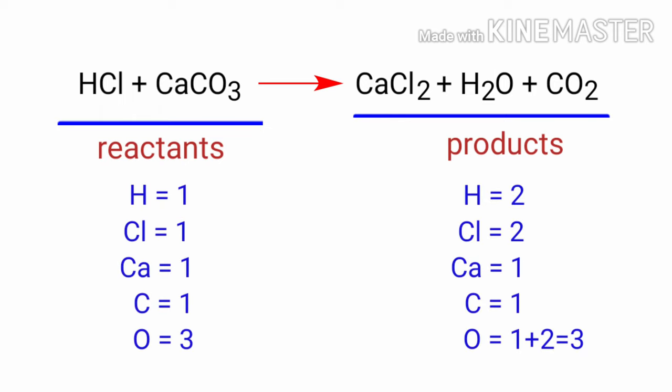If you look at this equation, the equation is not balanced. In the reactants side there are 1 Hydrogen atom, 1 Chlorine atom, 1 Calcium atom, 1 Carbon atom, and 3 Oxygen atoms present.